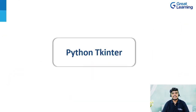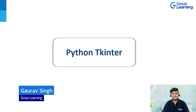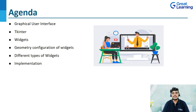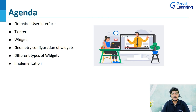Welcome to the course of Python Tkinter. My name is Gaurav and I welcome you all to Great Learning. Moving to the agenda: first we will see what is GUI, then Python Tkinter, then widgets and their geometry configuration. We have three geometric classes: place, grid, and pack. Then we'll see different types of widgets such as label, button, canvas, and more, with implementation of each widget.